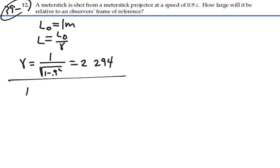So the observed length, which is the meter stick length over gamma, is going to be one meter over 2.294, and that's going to be equal to 0.436 meters.